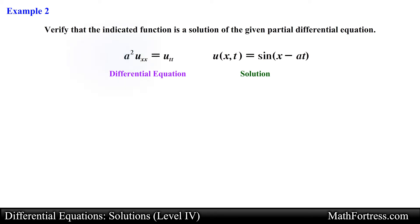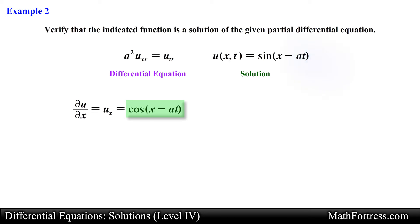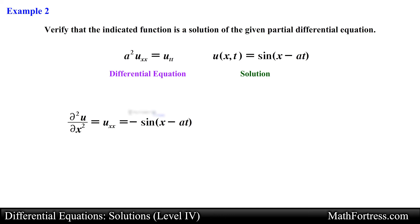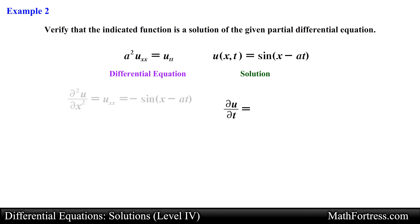Similar to the last example, let's find the partial derivatives. We first find the partial derivative of u with respect to x, keeping the variable t constant and applying the chain rule to obtain the following expression. Next, we again take the partial derivative of u with respect to x keeping t constant, and obtain the following expression. Now let's find the partial derivative of u with respect to t, keeping x constant and applying the chain rule. Doing that, we obtain the following expression.